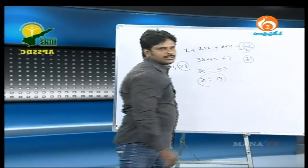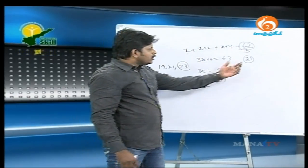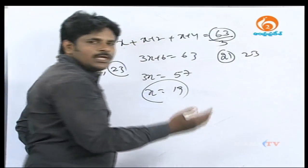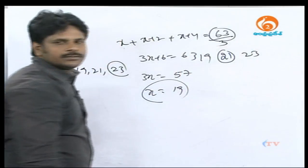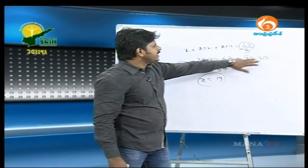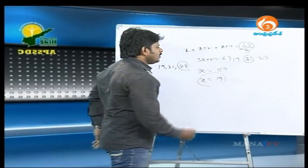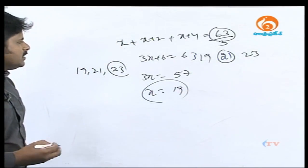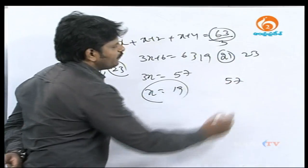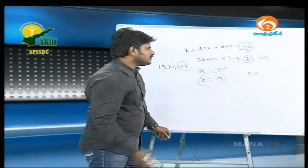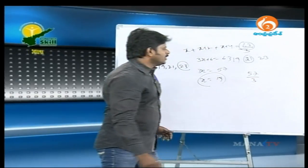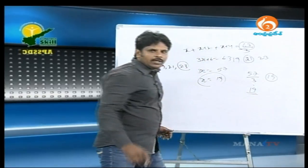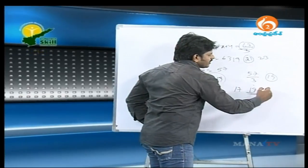Dividing the sum 63 by 3 gives 21, which is the middle odd number. Next odd number is 23, previous odd number is 19. For example, if the average of 3 consecutive odd numbers is 57, divide by 3 to get 19 as the middle number — values are 17, 19, and 21. For 5 odd numbers with sum 300, divide by 5 to get 60 as the middle number.